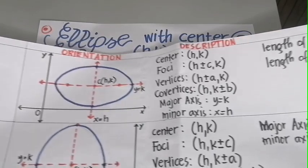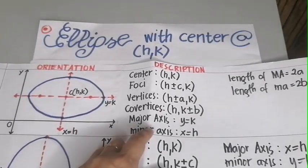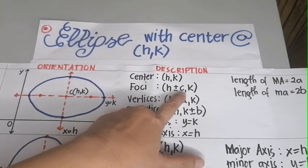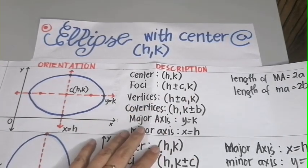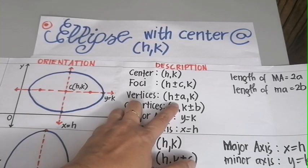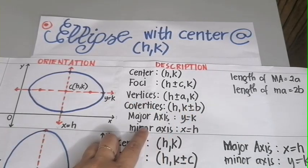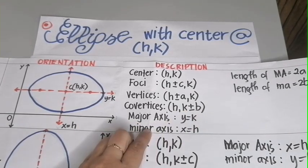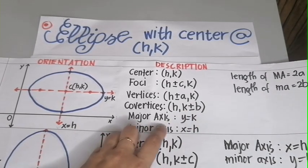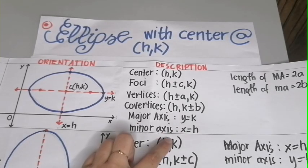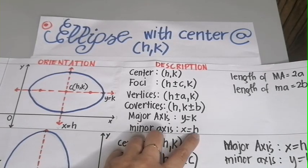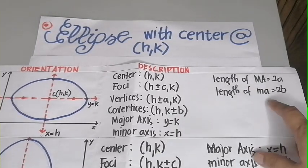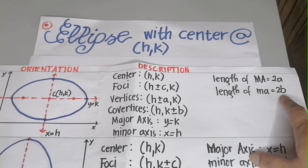Its description: the center is at HK. Foci is at h plus-minus c, k. Vertices at h plus-minus a, k. Co-vertices at h plus-minus b. Major axis is y equals k. Minor axis is x equals h. The length of the major axis is 2a and the length of the minor axis is 2b.